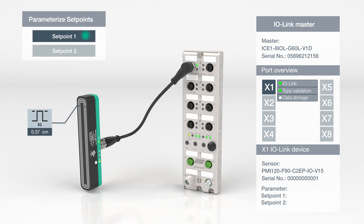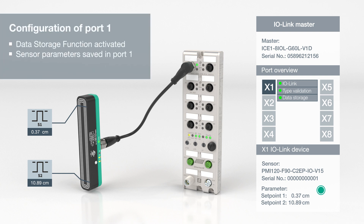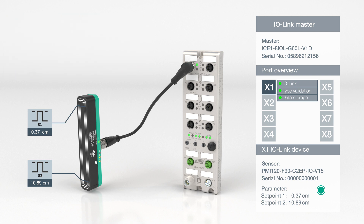The data storage function can be used to ensure that these parameters will not be lost if a device needs to be replaced. The function is activated at the respective port on the IO-Link master, so that the master acts as a parameter server. The device's parameter data is then also stored on the IO-Link master port.